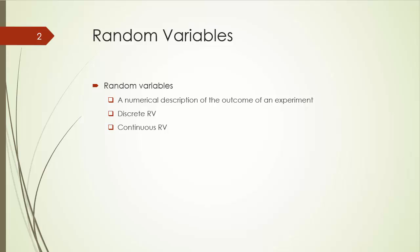X is obviously a discrete random variable, which can take 6 values from 1 through 6. On the other hand, a random variable that can assume any numerical value in an interval or collection of intervals is a continuous random variable. For example, if X is the random variable representing the height of all possible players, X is apparently a continuous random variable.